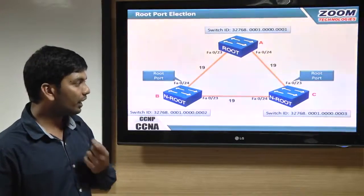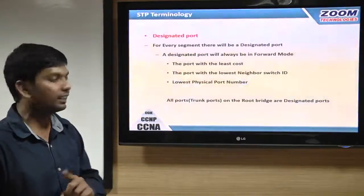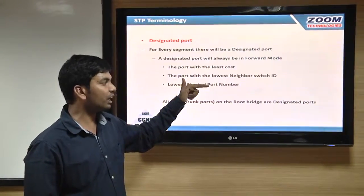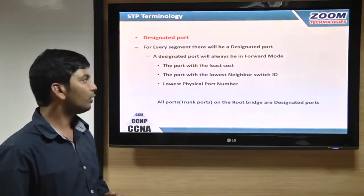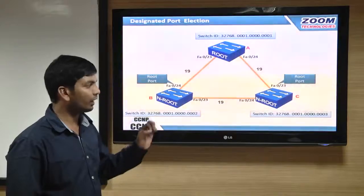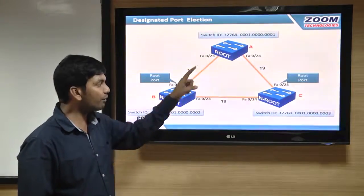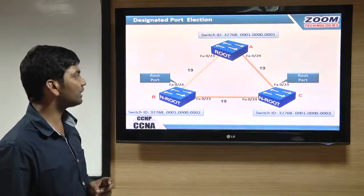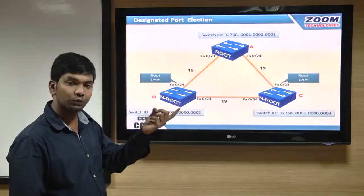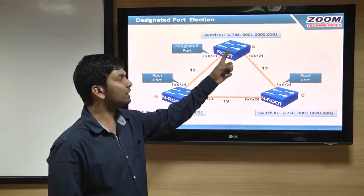Next election is for designated ports. After electing designated ports, the remaining ports become blocked ports. For every link or segment, there is one designated port. Election criteria are the same as root ports: least cost, then lowest neighbor switch ID, then least physical port number. For the link A to B, the 23rd port on switch A has least cost since it lies on the root switch — that becomes the designated port. Similarly for link A to C, the 24th port on the root switch has cost zero and becomes the designated port.